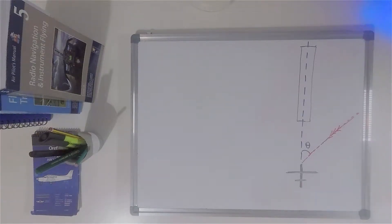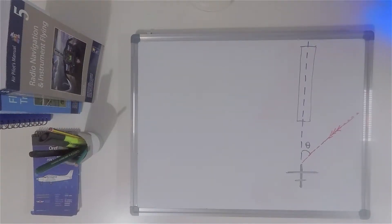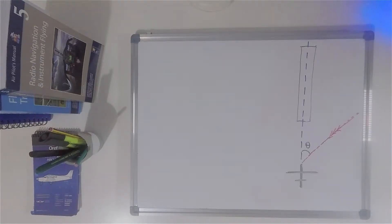Hi everybody, welcome to my channel and another video podcast. I hope you are doing really great. Today we are going to be talking about how to calculate crosswind component in three different ways. Let's suppose first of all that we are on final approach on a runway and we also have available all the wind information needed.